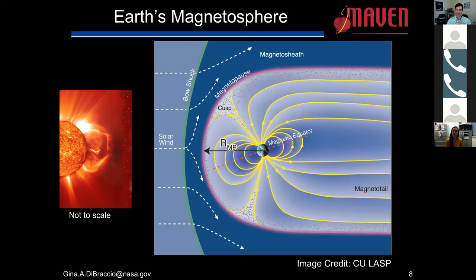One more question: have we detected any comparable magnetic tail twist at Venus? Not to the best of my knowledge. As far as Venus is concerned, I'm not sure if we have the coverage in the tail to observe this.